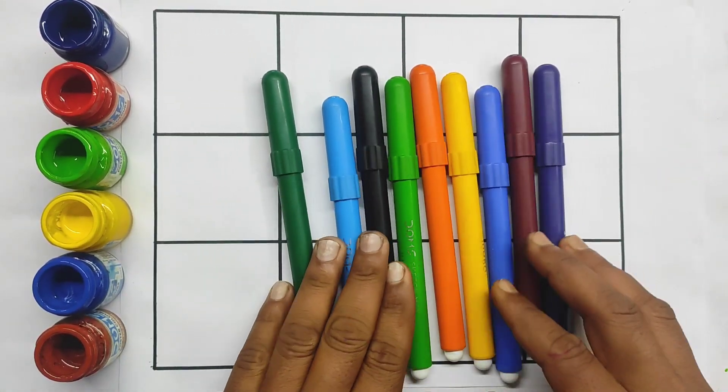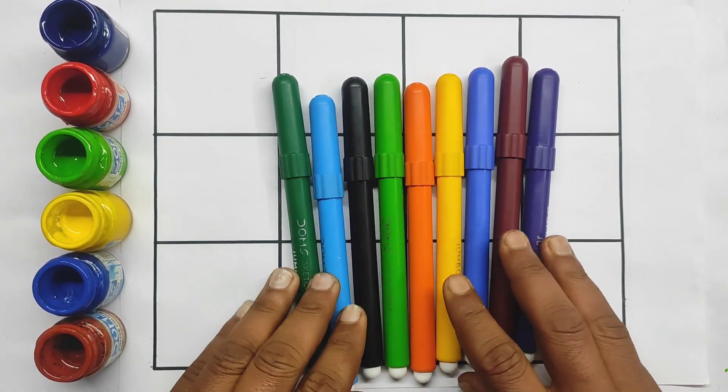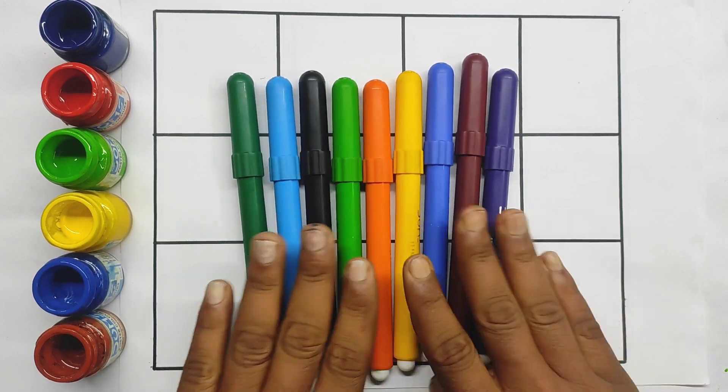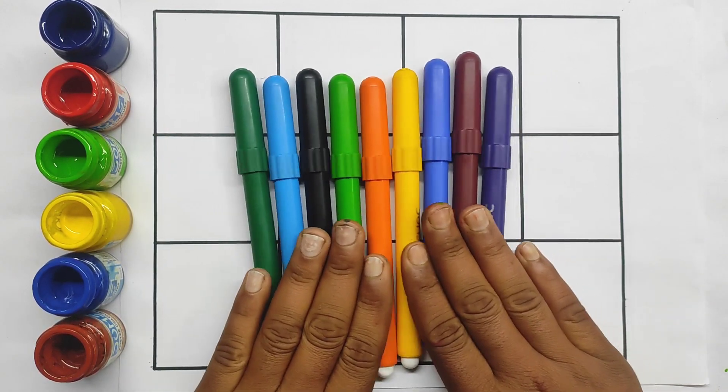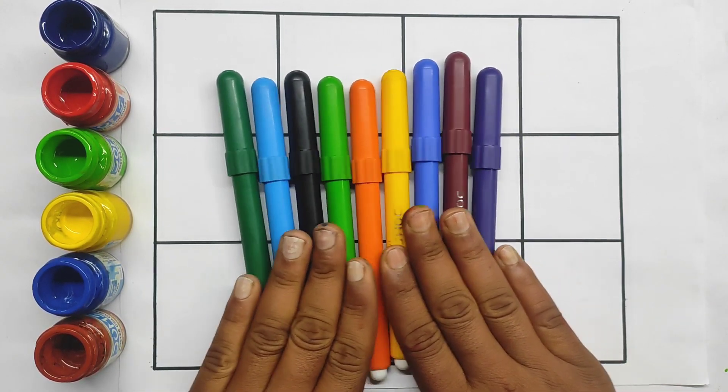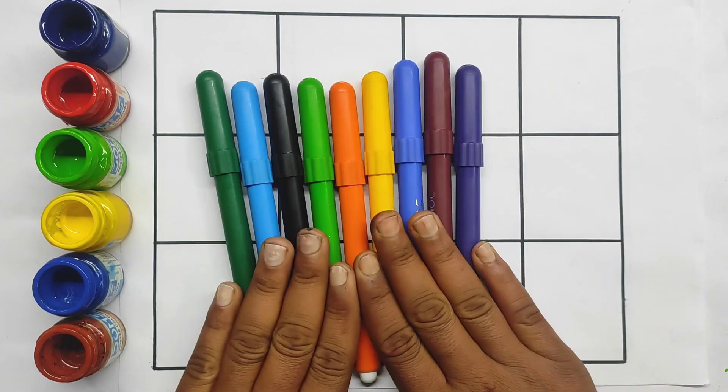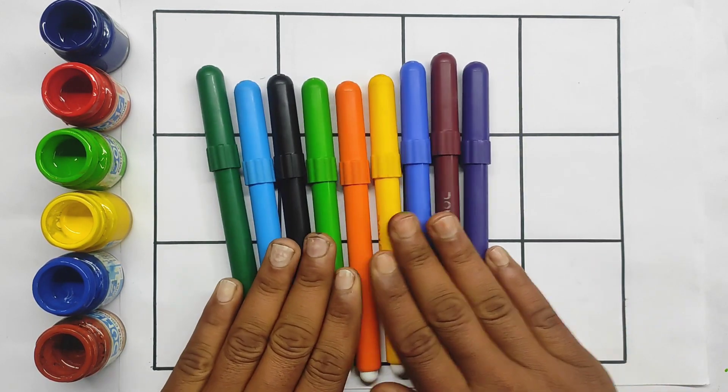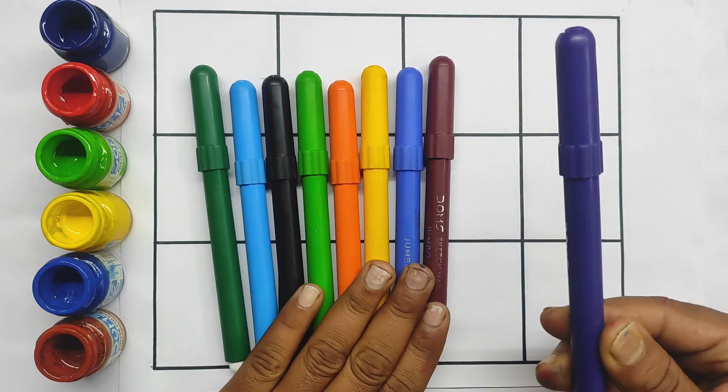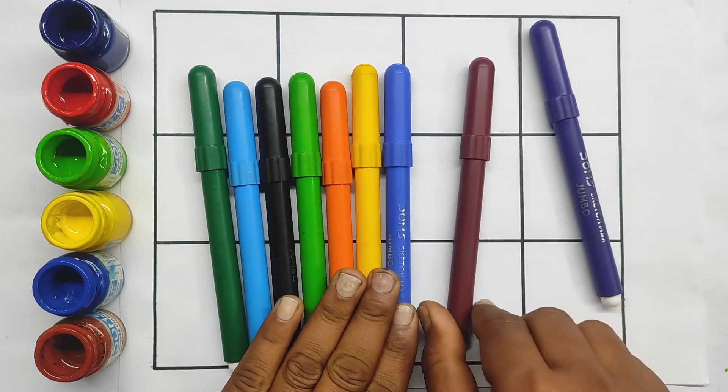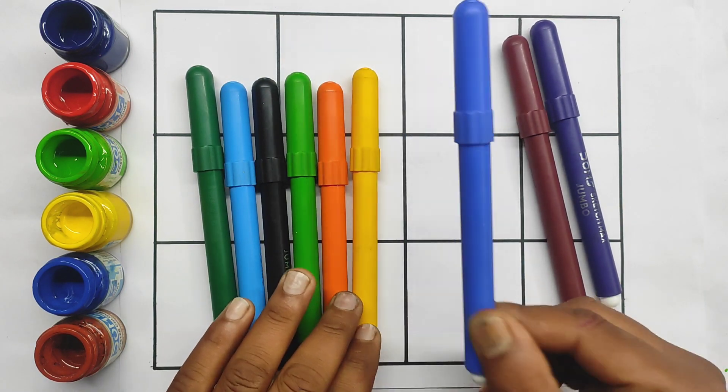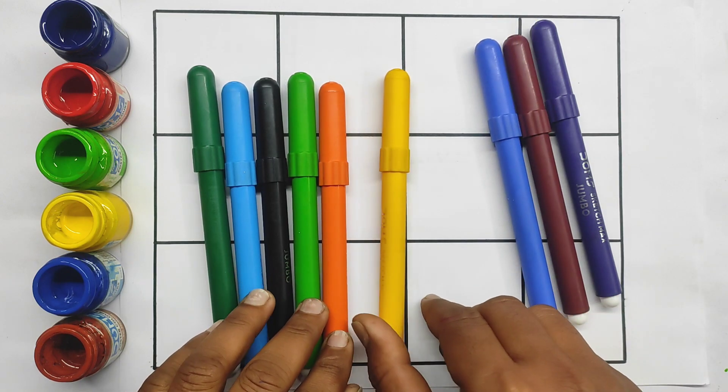Hello kids, today we're learning the English alphabet. Watch this video. Let's start with colors: purple, brown, blue.